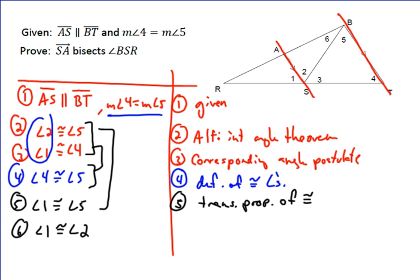And remember, angle one congruent to angle two is what we were looking for. We just used the transitive property of congruence again. And so our last step is to make our claim that SA bisects angle BSR.